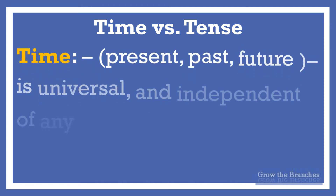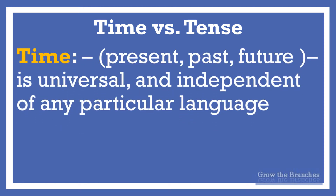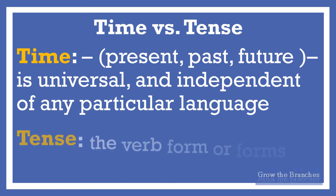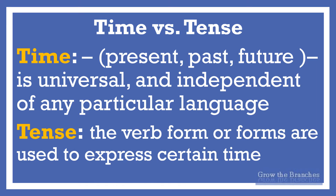The notion of time — present time, past time, future time — is universal and independent of any particular language or of any language at all. Tense, on the other hand, is a linguistic concept varying from language to language. It means the verb form or forms used to express certain time relations. That is, when you want to express present, past, or future time, you need to select the right grammatical form of the verb — tense — to be able to express your idea without any misunderstanding.